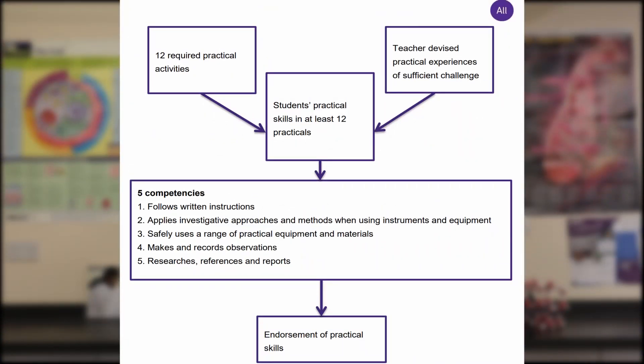Practical endorsements are the assessment of practical skills for A-level biology, chemistry and physics. These practicals are very important and there are a minimum of 12 of them split between AS and A-level — 6 for AS and 6 for A-level — and they vary from board to board.